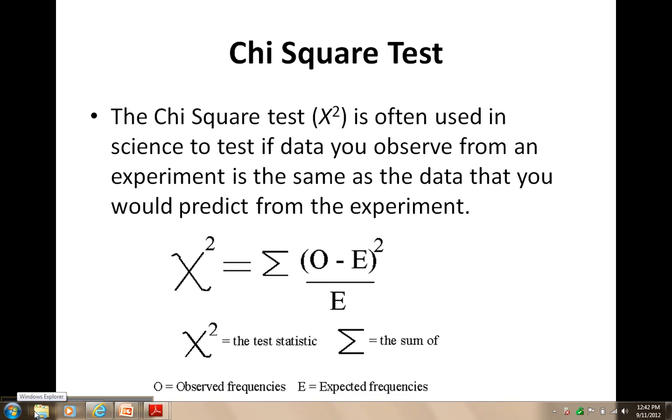The chi-squared test is symbolized with X-squared, and we will be using it to determine if the data that we observe in our experiment is the same as the data that we would predict from the experiment.